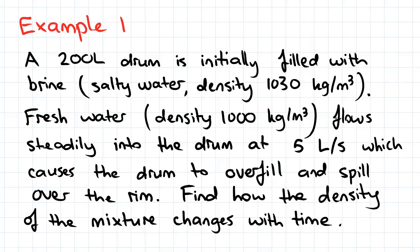Fresh water is flowing steadily into the drum at 5 liters per second—we've also been given that density—which causes the drum to overfill and spill over the rim. We've been asked to find the density of the mixture as it changes with time.